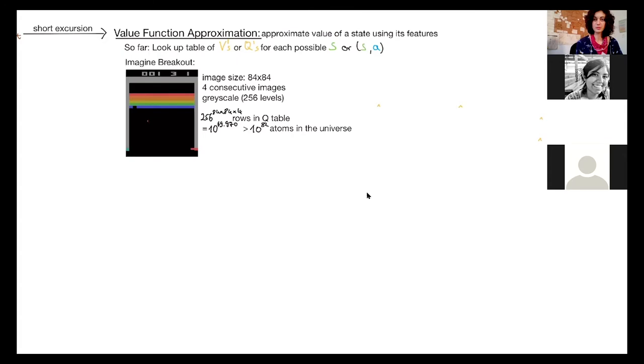And even if it would be possible in a smaller example, it might even not be useful, because almost every state that is encountered was never seen before, if you have so many states. So it is just so unlikely that we end up in exactly the same state. So most of our Q values or V values are just not learned random noise. So we need to generalize somehow.